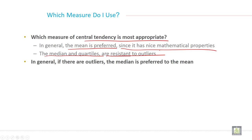The median and quartiles are resistant to outliers. In general, if there are outliers, the median is preferred to the mean. If there are outliers, you should prefer the median instead of the mean.